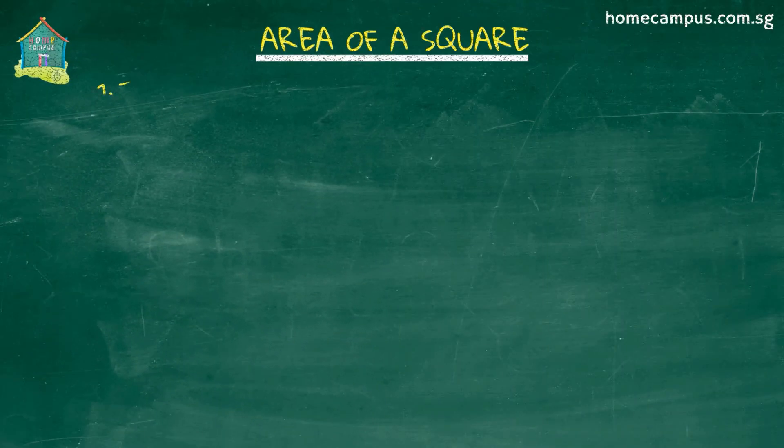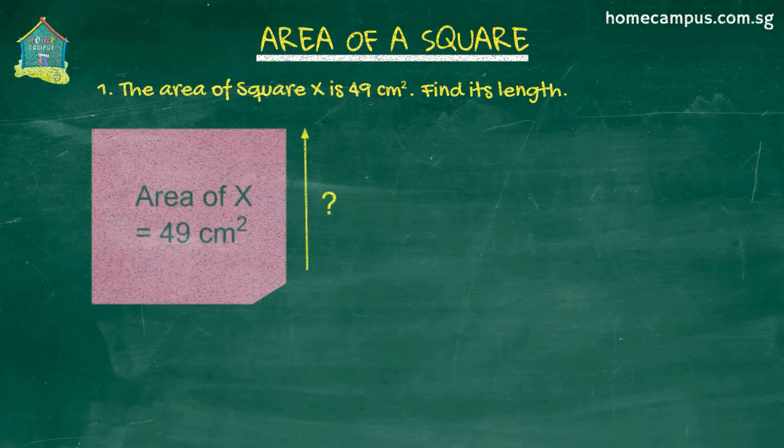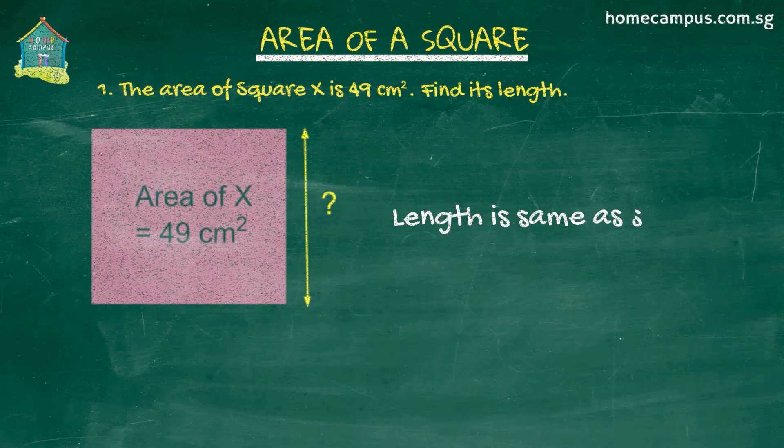Our first question is: Square X has an area of 49 centimeters square. Find its length. Just a little side note, by length we mean side. In some questions they call it length, in others they call it side but they all mean the same.